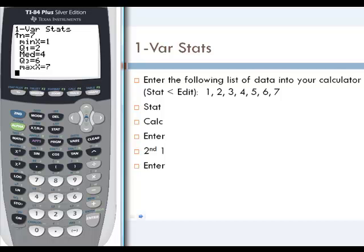And then if we scroll to the bottom, we get the minimum value, Q1, the median value, Q3, and the maximum value, which is our five-number summary that we can use to help construct the box plot.